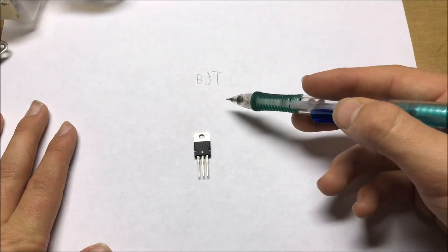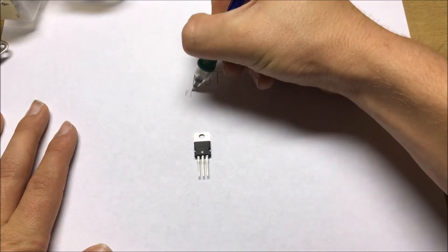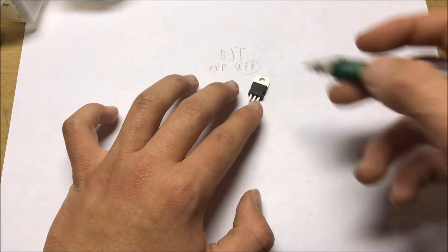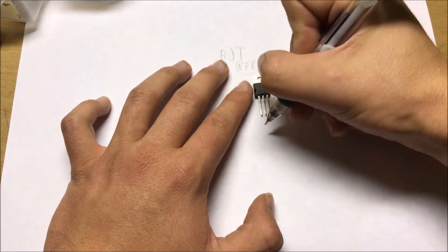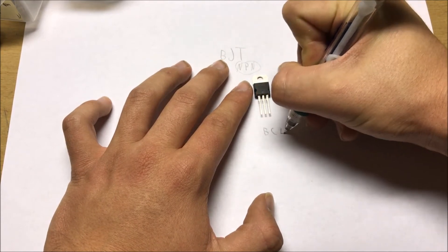Now there are two types of BJTs. There are PNP and NPN. All the BJT NPN transistors have three different pins on them, and the pins go base, collector, emitter.